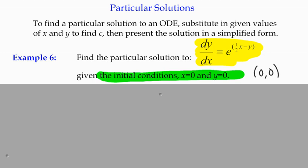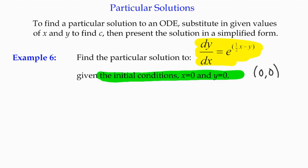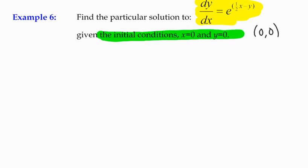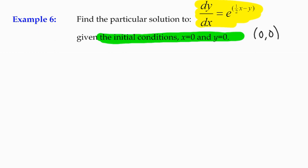So that would be information we put in once we've got our general solution. We're still going to start off by finding the general solution, so we're going to take the function dy/dx equals e to the half x minus y.